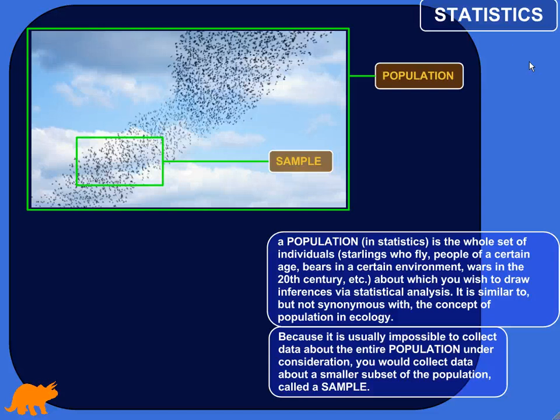Let's talk about the idea of a population in statistics and a sample, which would be a part of the population. A population, when you think of it in the general sciences, refers to all the individuals maybe in the world or in a certain area. In statistics, a population is the whole set of individuals about which you wish to draw inferences or conclusions using statistical analysis.